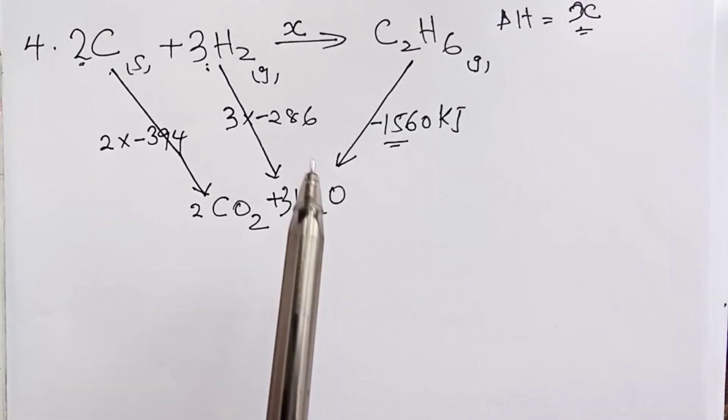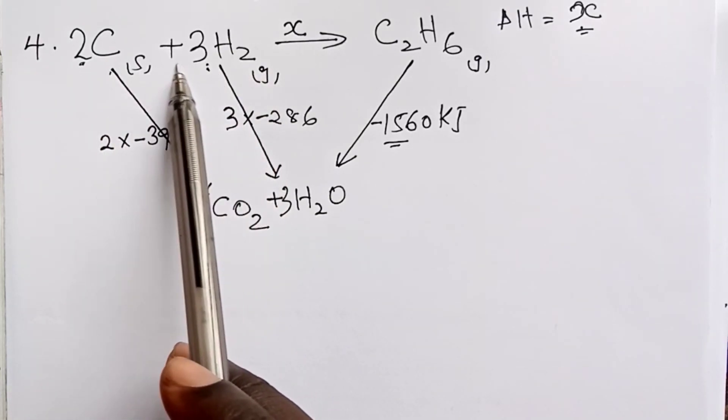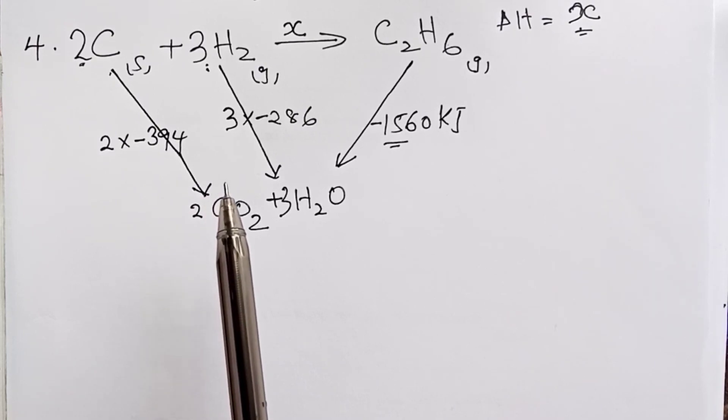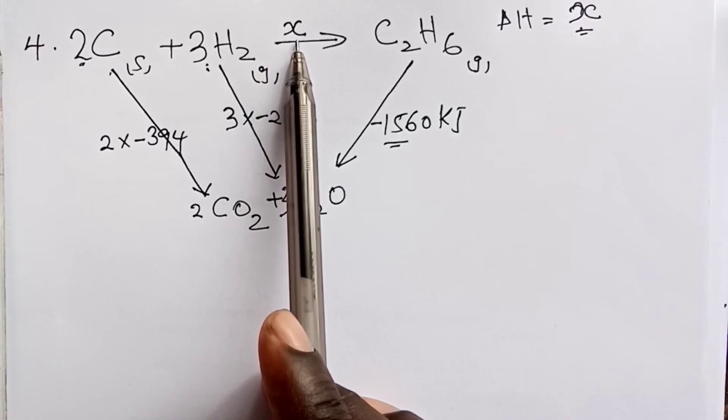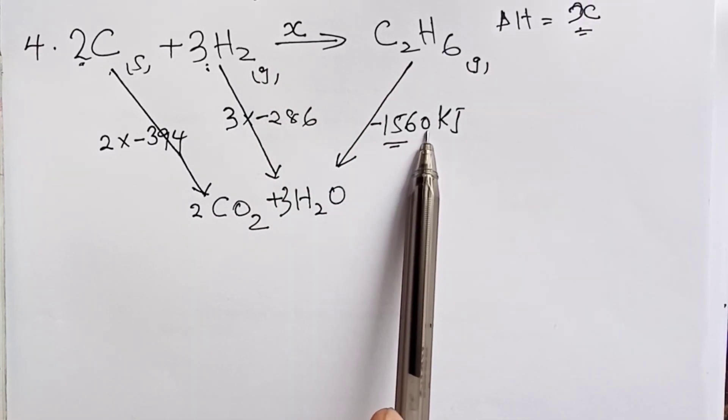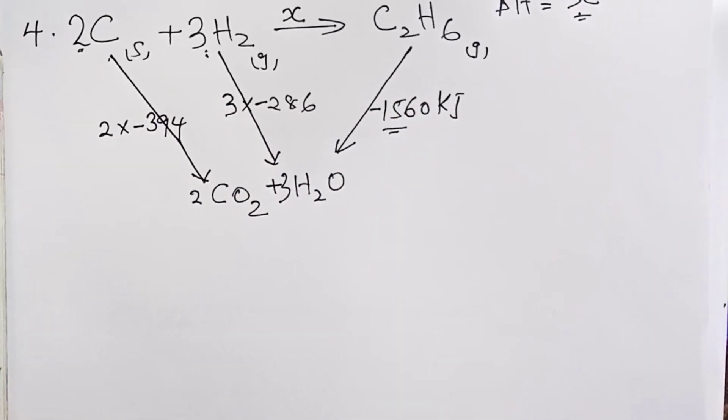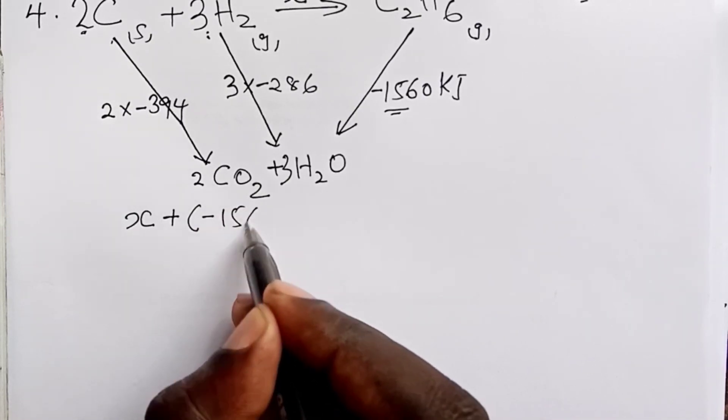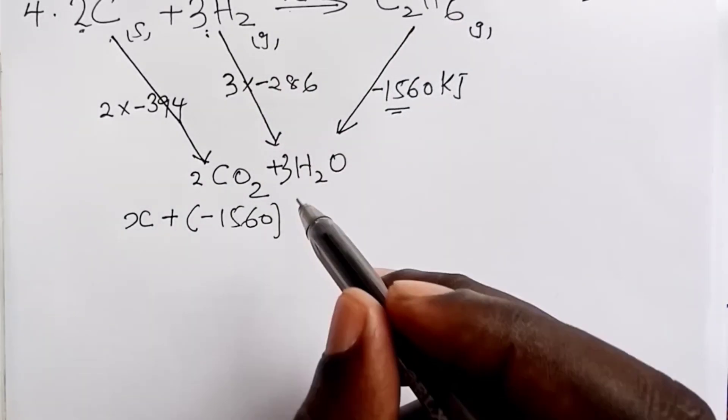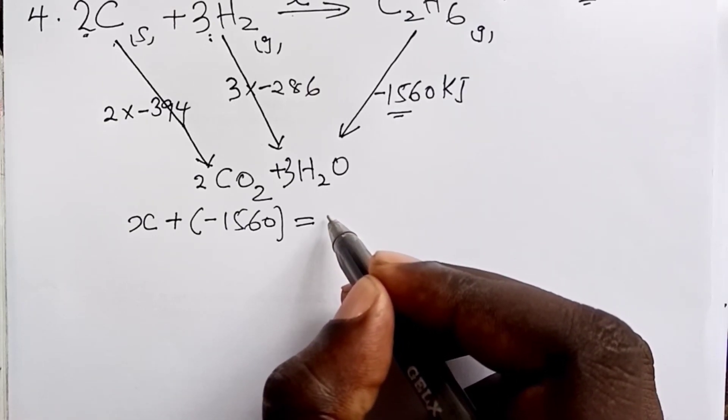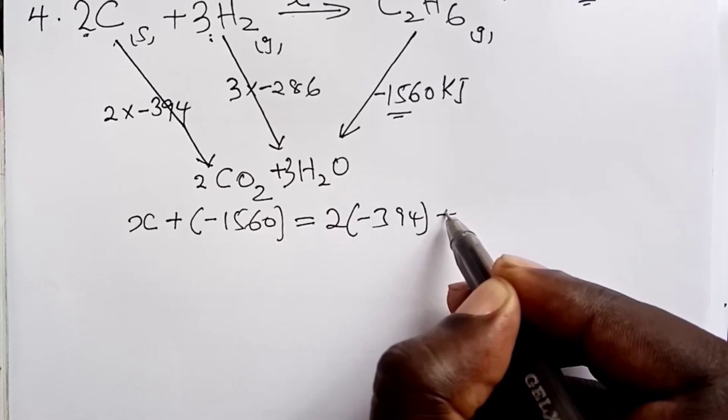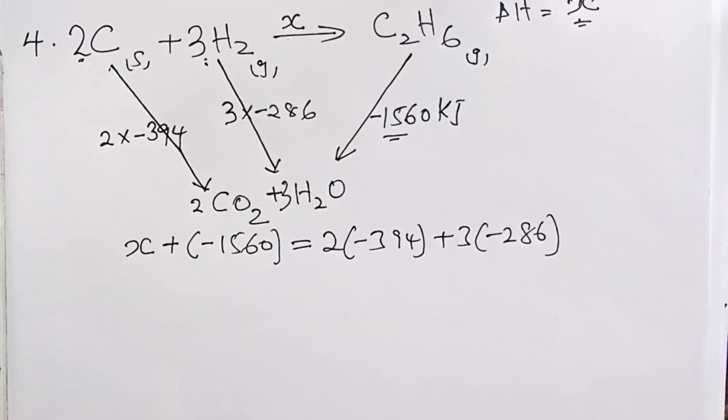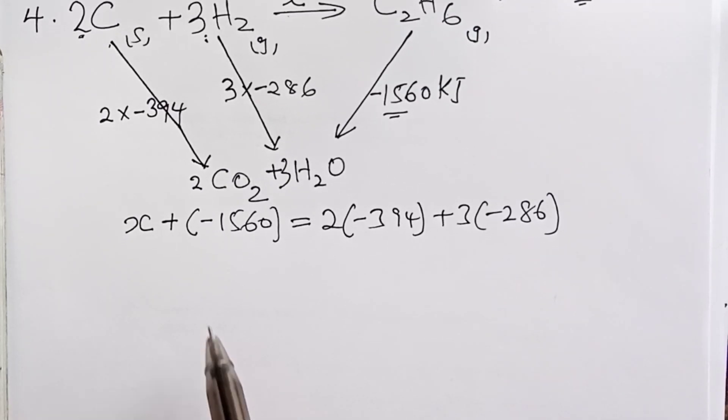How? By identifying the starting point for our reaction. Here it is. And then you identify the end. And here we are. So looking keenly, we have two roots that can lead us from reactants to products. And here we have X and 1560 is the first root. And then we have these two as the second root. So by Hess's law, we know X kilojoules added to negative 1560. That is for our first root here, should give the same amount of energy as the second root. So we shall get 2 into minus 394 added to 3 into minus 286. So the two roots should give the same amount of heat energy if Hess's law is anything to go by.